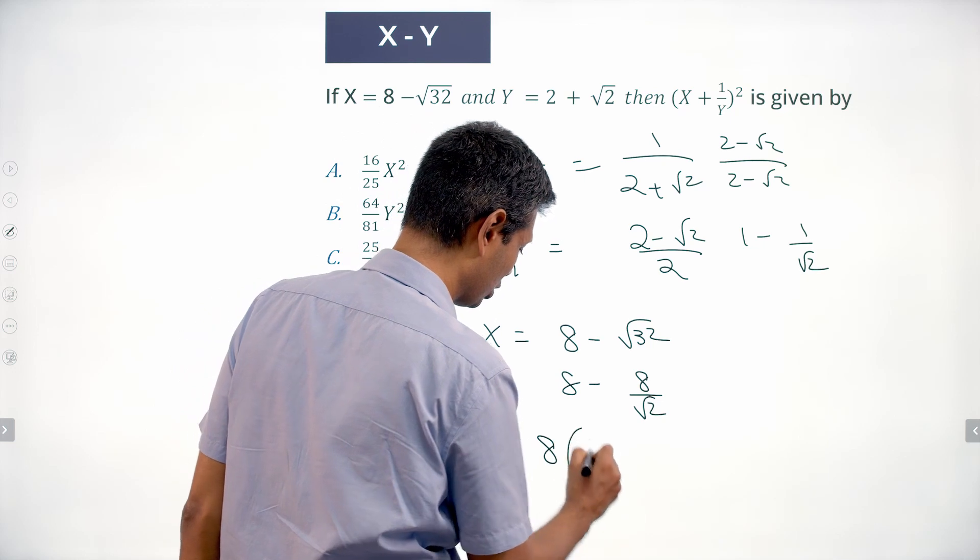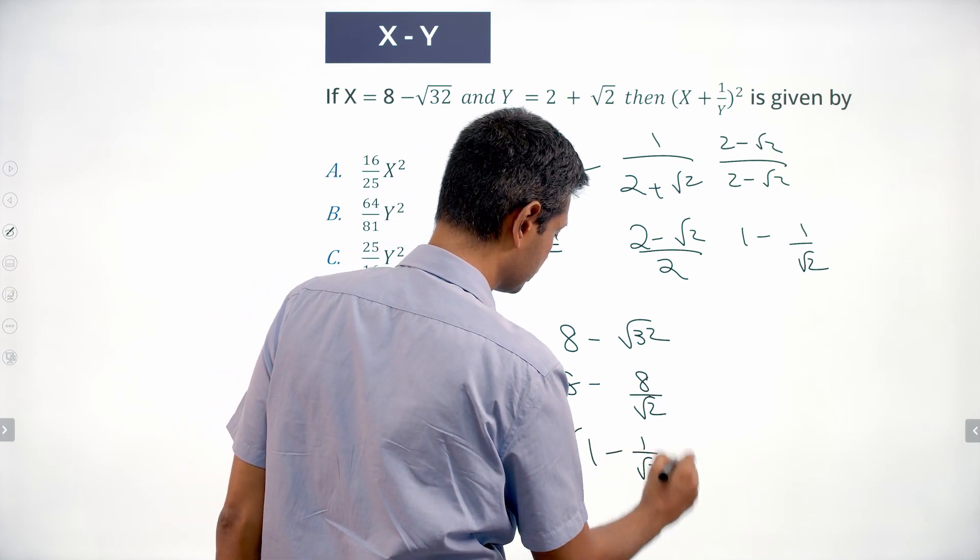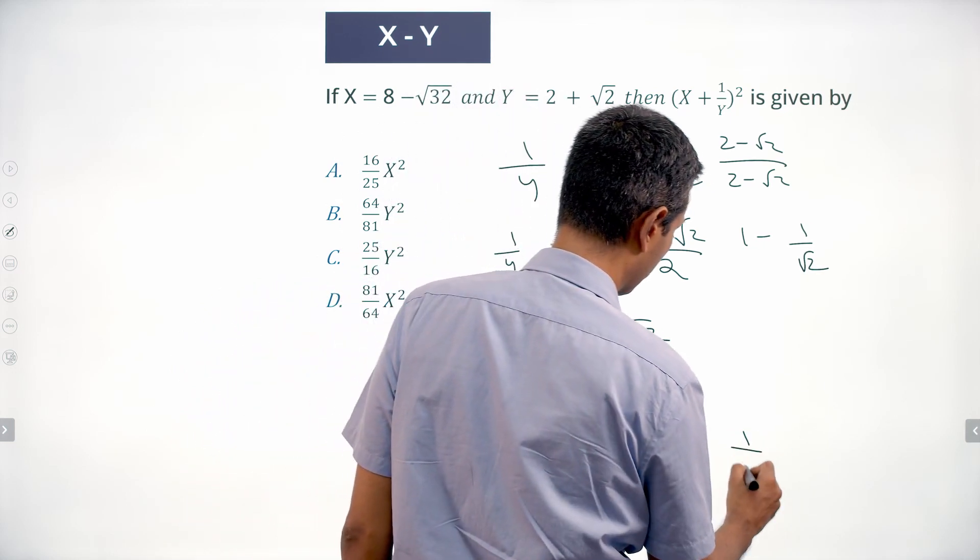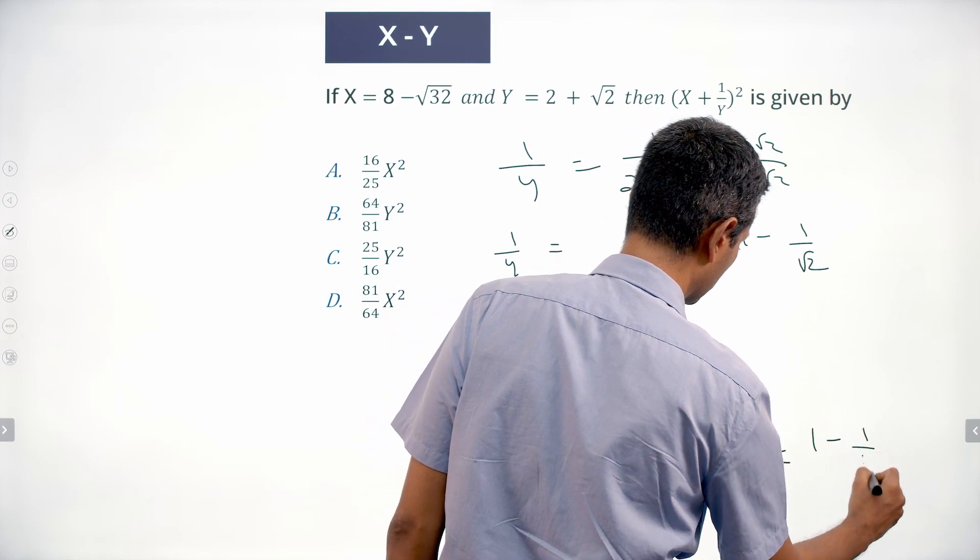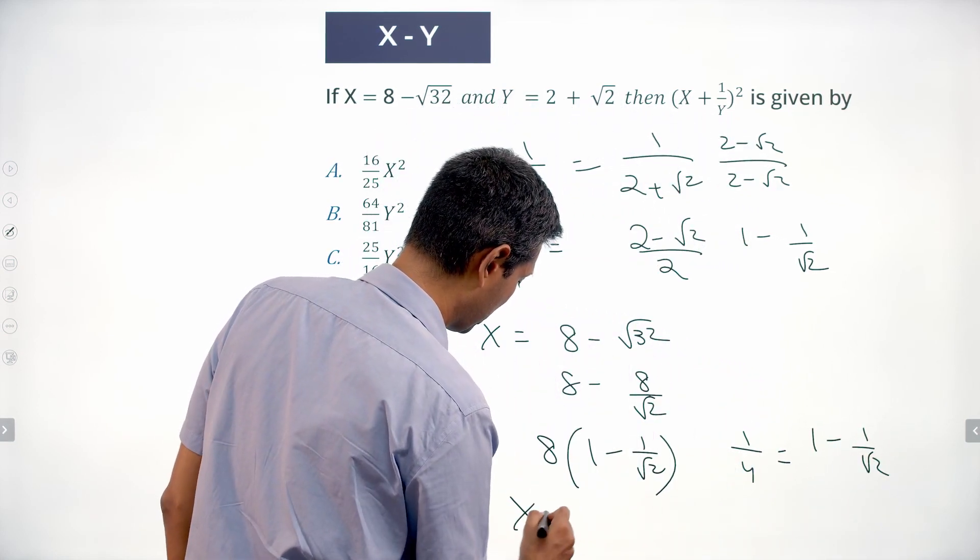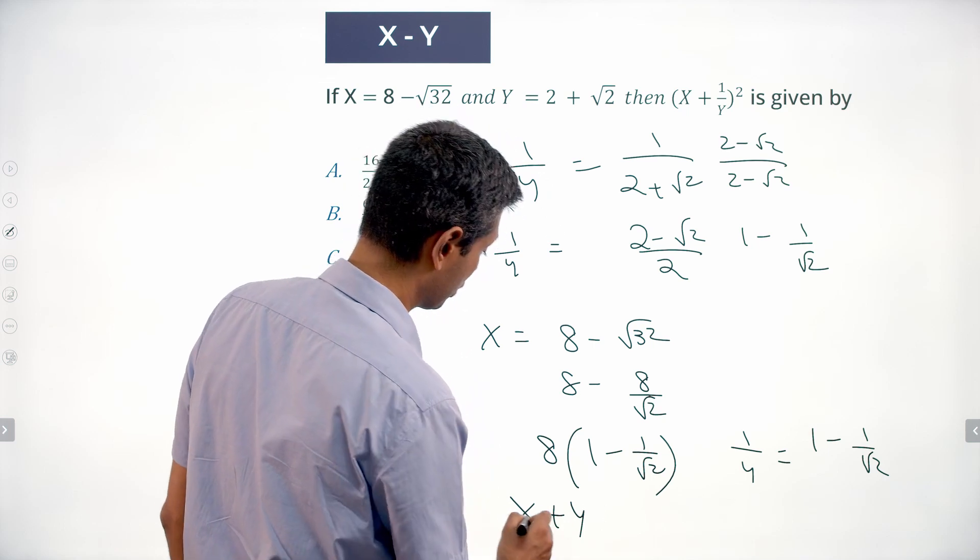This is 8 times 1 minus 1 by root 2. 1 by y is 1 minus 1 by root 2. And if I do x plus 1 by y...